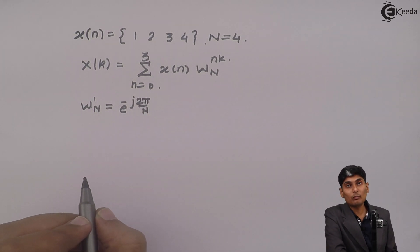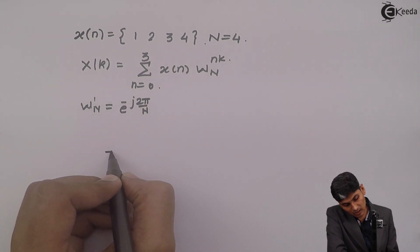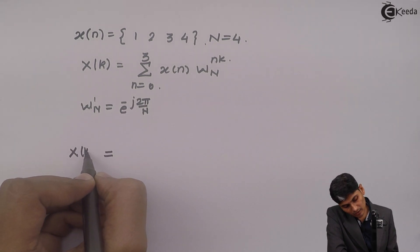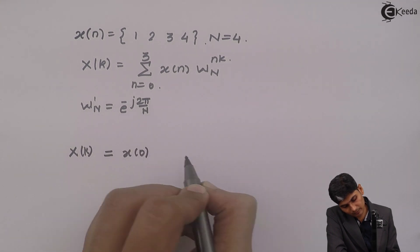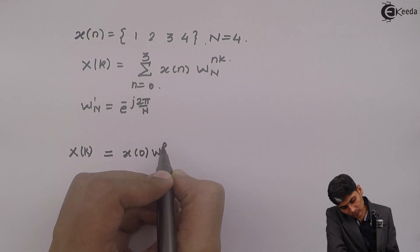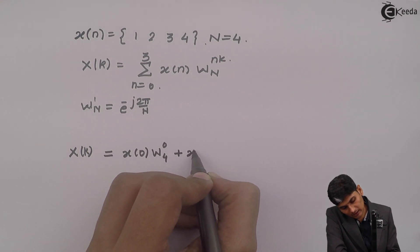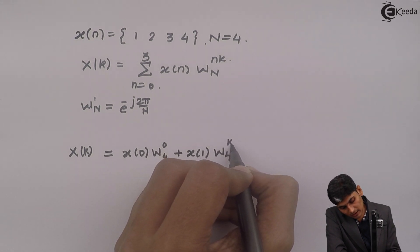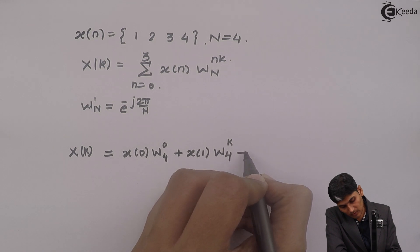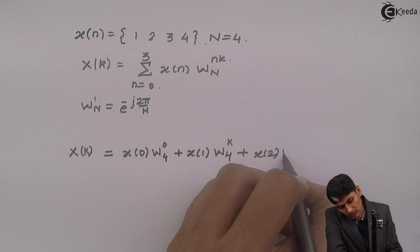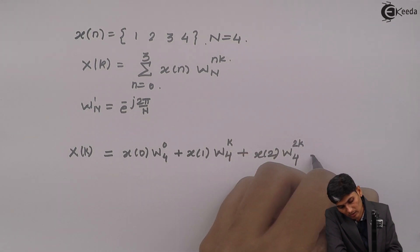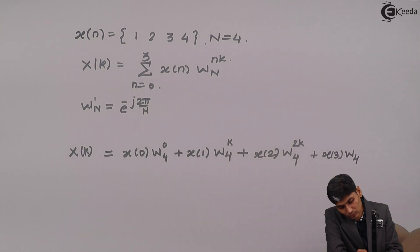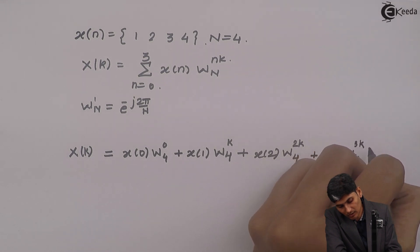Now suppose we open up these brackets, the summation, then I am going to get x(k) as equal to x(0)w_4 raised to 0 plus x(1)w_4 raised to k plus x(2)w_4 raised to 2k plus x(3)w_4 raised to 3k.